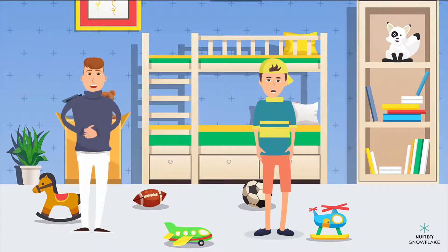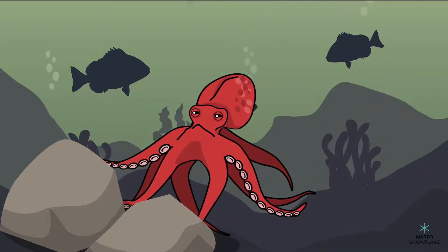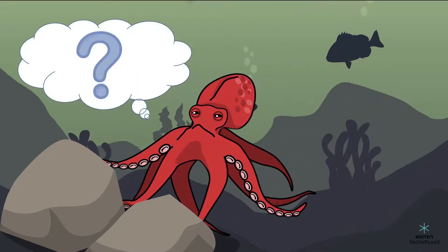Yes, especially since octopuses don't always watch where they put their arms. Sometimes they'll stick their arms in holes in rocks to search for prey. So they can't always see what they're touching. By tasting whatever it is they are touching, they can tell if it's good to eat or not.